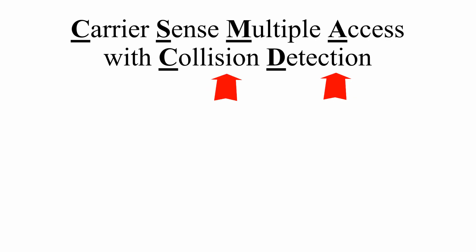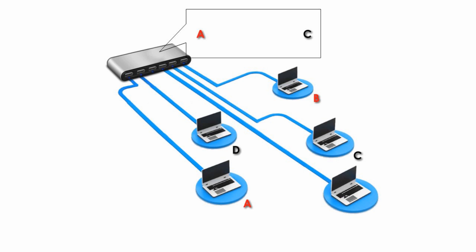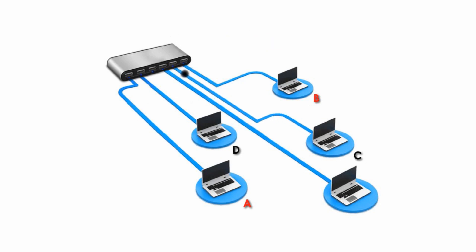Now let me talk about CD. CD stands for collision detection, which means a node can hear a collision if that happens. For example, both A and C want to transmit their data, and they check the media and find it is not busy. Therefore, they send the message at the same time. Well, collision occurs. When these two nodes hear the collision, they will back off and use some kind of randomization to decide which would go first in order to avoid collision again.